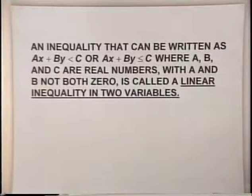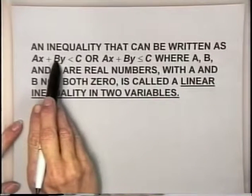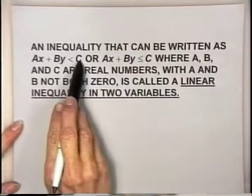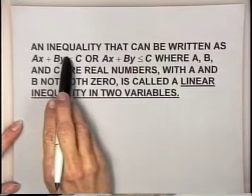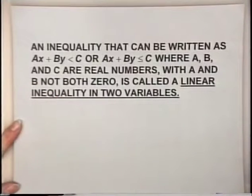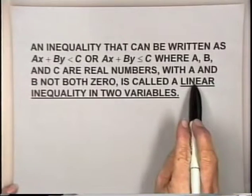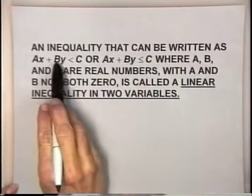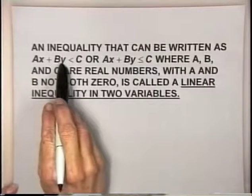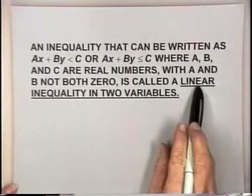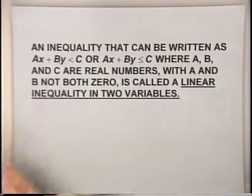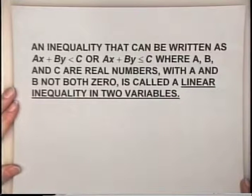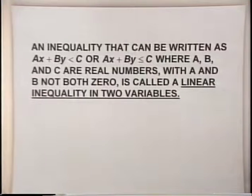Notice that ax plus by less than c is very similar to ax plus by equals c, which is the definition of a linear equation. What makes this linear is that x and y are in separate terms and both are to the first power. The inequality is because this says less than rather than equals. These inequality symbols could also say greater than or greater than or equal.